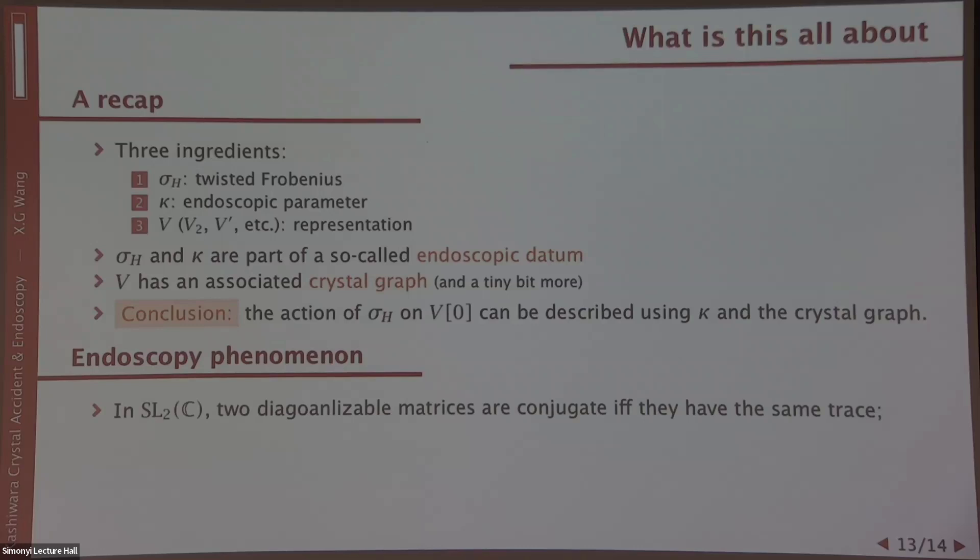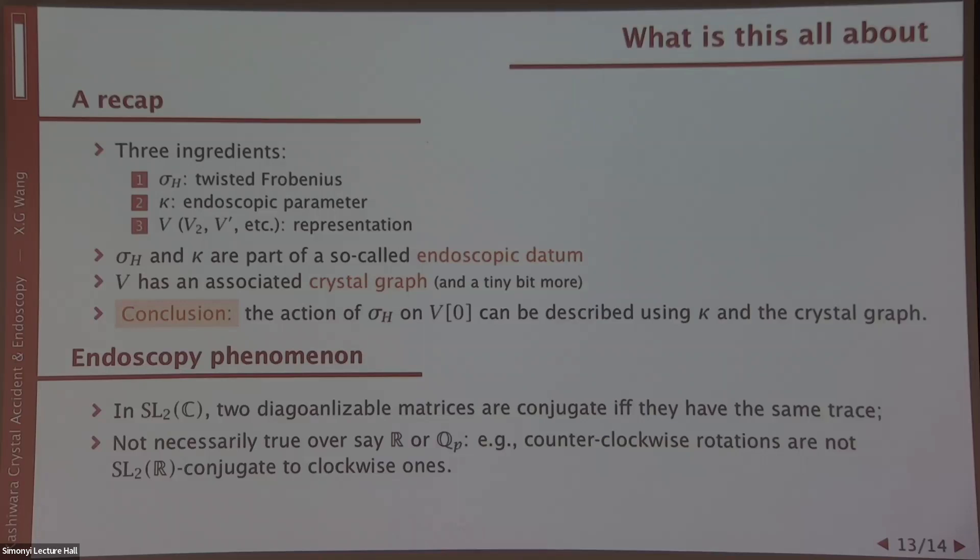What is this endoscopic phenomena? Let me explain using a very simple example. In SL2 of C, any two diagonalizable matrices are conjugate if and only if they have the same trace. This is just basic linear algebra. But it's no longer true in, for example, SL2 R, because if you have counterclockwise rotations, they are not SL2 R conjugate to clockwise ones. They are conjugate over either SL2 of C or GL2 of R. This is the endoscopic phenomena. They lead to huge interest in number theory. Our pharmaceutical pursuit will be worth the money.